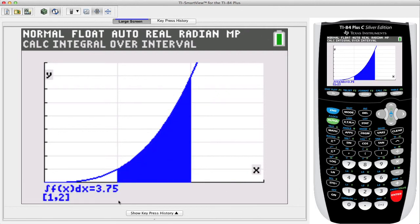Notice how it shades in that region, and we see that the integration over that interval comes out to be 3.75, which is the same thing we calculated by hand. And here in square brackets, we see that the interval was also the same.